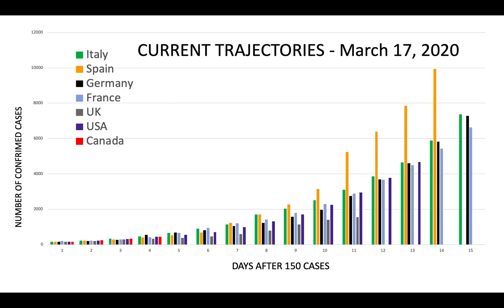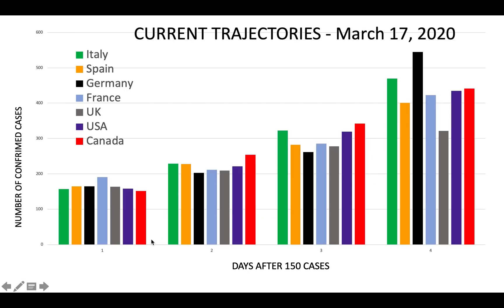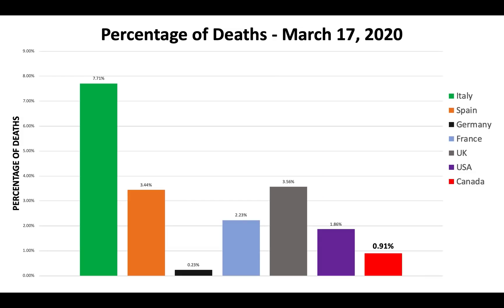Our current trajectories as of March 17, 2020 are as follows. We're all growing exponentially. Canada is right here at day four after 150 cases. You can see Canada is growing roughly the same rate as every other country. The percentage of deaths as of March 17, 2020: Canada remains low at 0.91%, Italy is the highest at 7.71%.